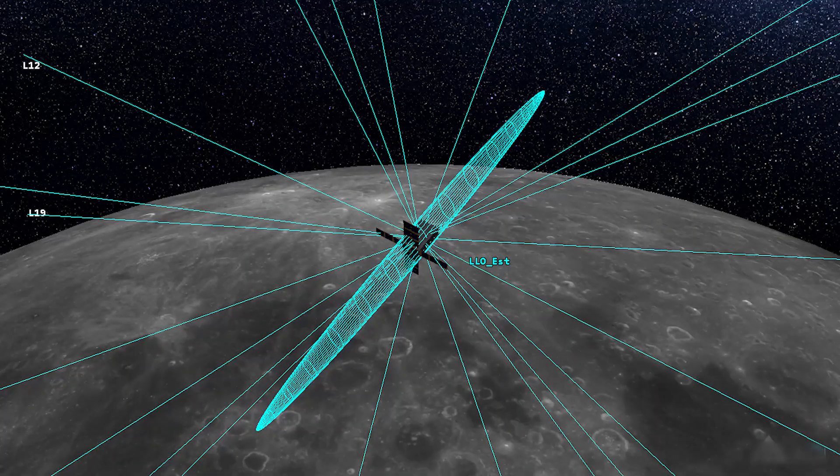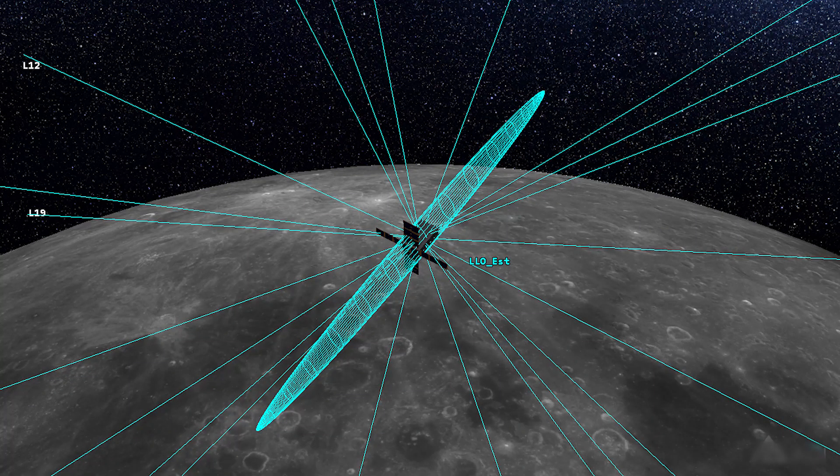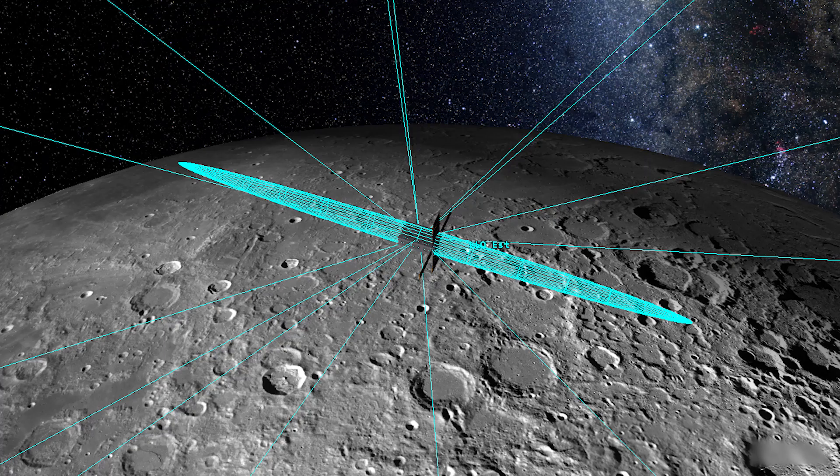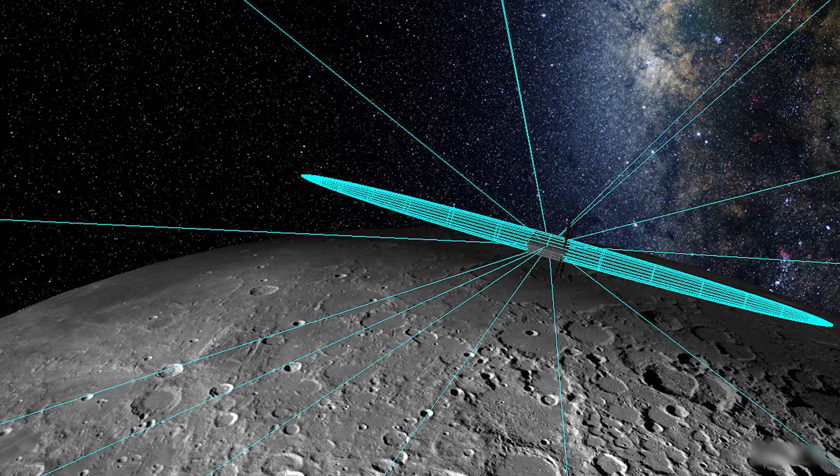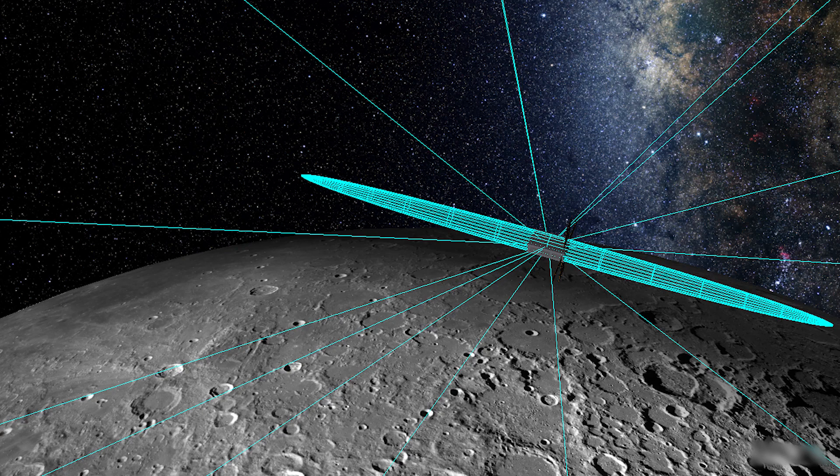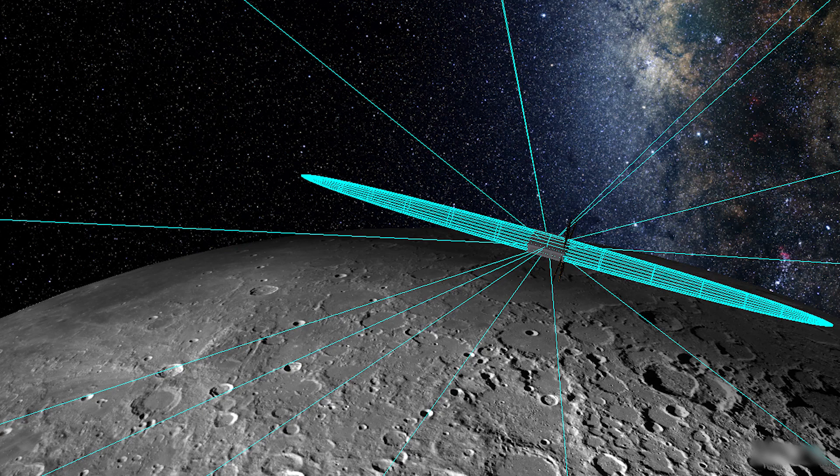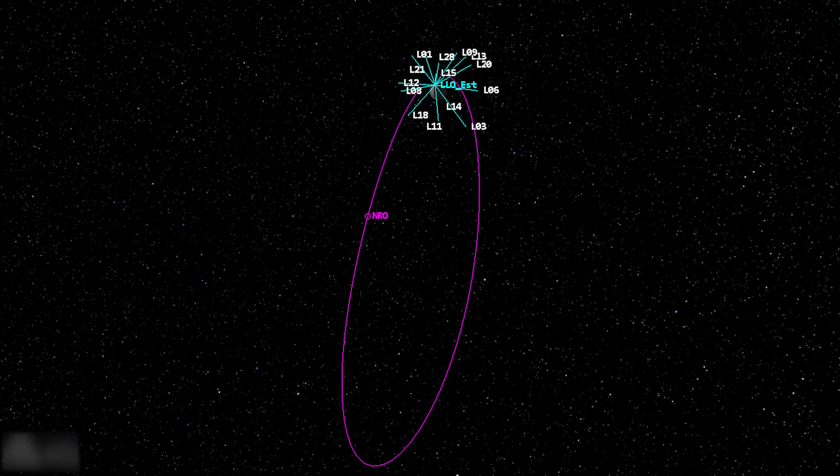The continued growth of interest in operating in cislunar space has increased the need for tools that provide greater accuracy in tracking and predicting spacecraft behavior in this relatively unexplored orbital regime. To that end, this release of ODTK has introduced several enhancements that address the current operational needs as well as those of mission designers planning for future mission architectures and their unique requirements.